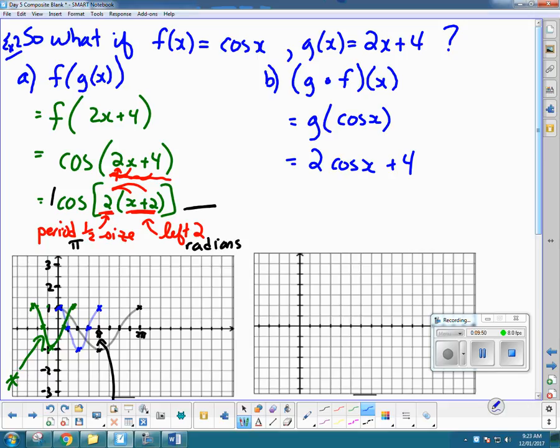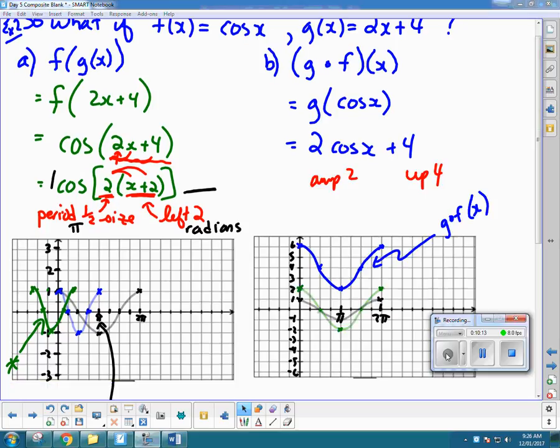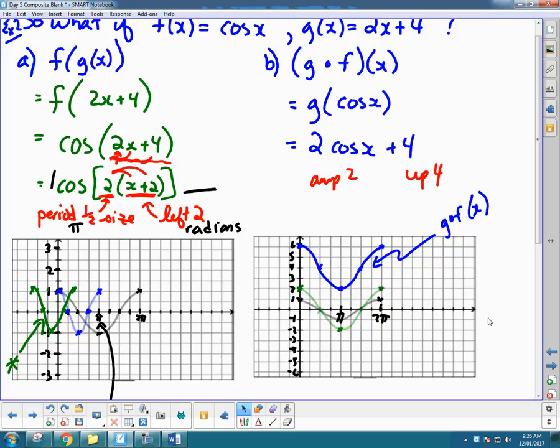And this one is actually going to be a lot easier to graph, isn't it? There's no phase shift. There's no period change. This is just the cosine function that is multiplied by 2 and then added 4. So the amplitude is 2 and it's moved up 4. And I think I'll leave it with you to finish this. But here's what the picture looks like. And so there is the final graph of the cosine function with a new amplitude of 2 and shifted up 4. And that's a much easier one.